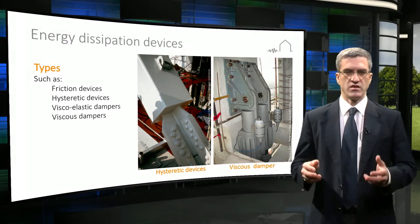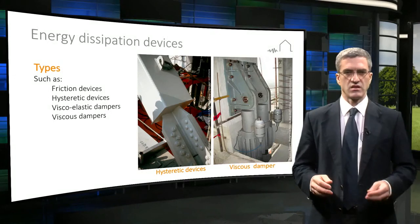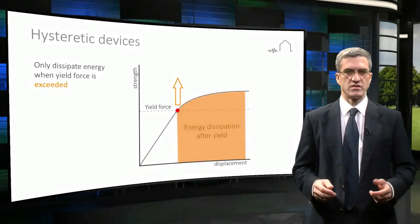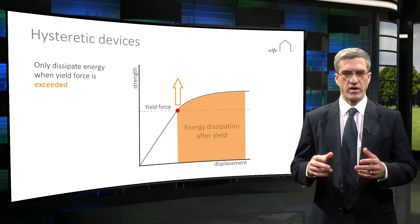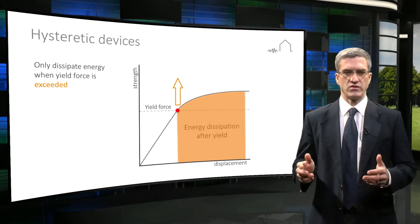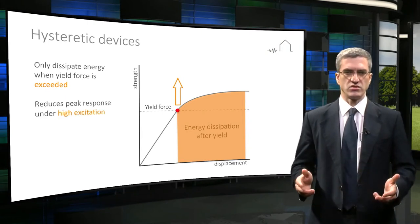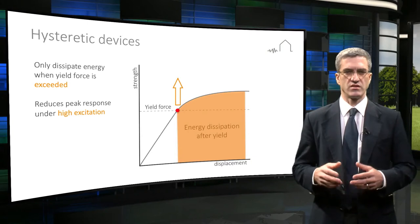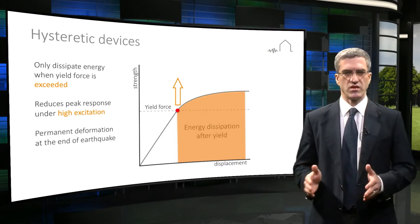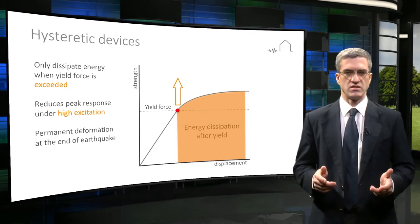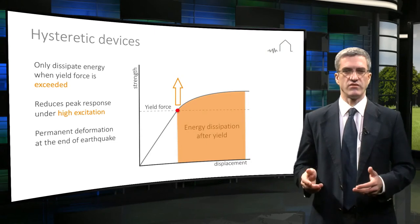Friction devices, hysteretic devices, viscoelastic and viscous dampers are examples of energy dissipation devices. Hysteretic devices are intrinsically non-linear and only dissipate energy when their yield force is exceeded. They rarely provide benefit at modest levels of shaking. Under high excitation, the energy dissipated will reduce peak responses, but structures incorporating hysteretic devices will generally experience some permanent deformation at the end of an earthquake. Hysteretic devices are elements with high energy dissipation and non-degrading hysteresis, and they may need to be replaced after a significant earthquake.